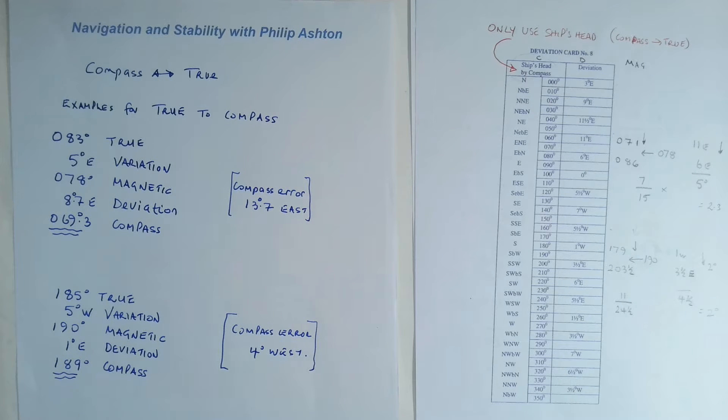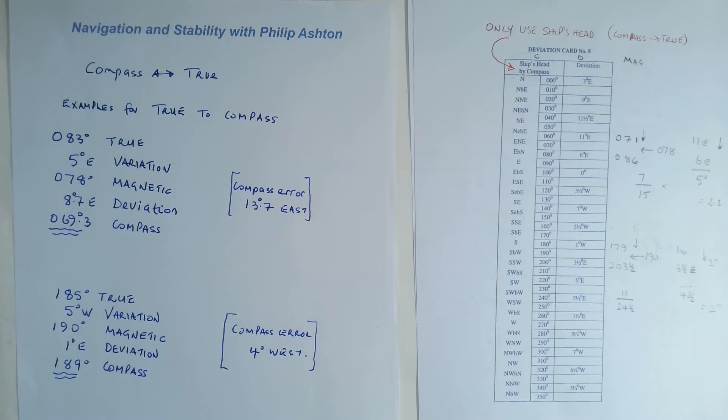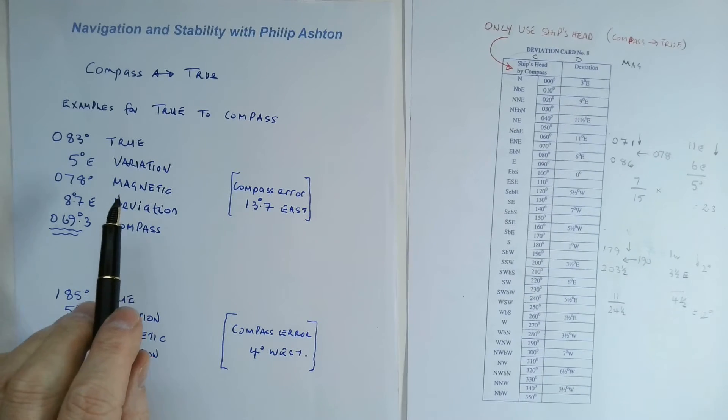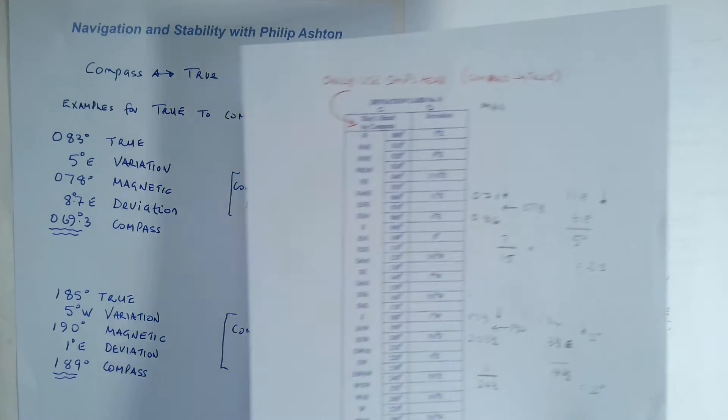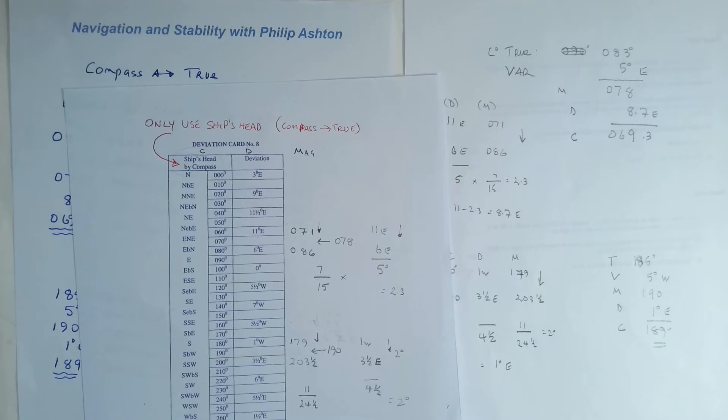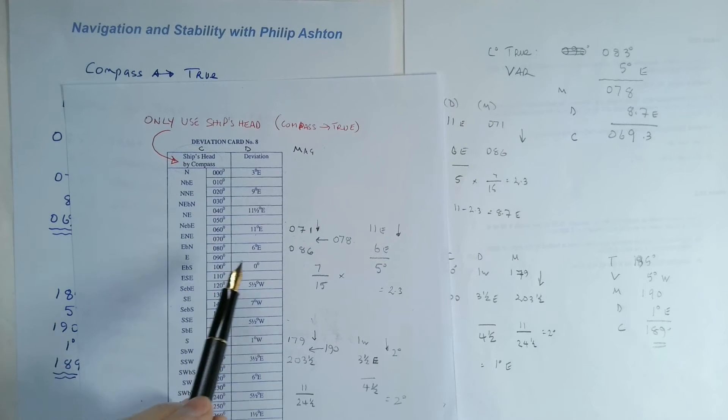We'll just have a quick look at converting from true to compass. Going from compass to true is quite straightforward: compass, deviation, magnetic, variation, true. But remember, of course, you can only use the ship's head when getting the deviation from the deviation card.